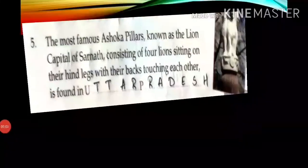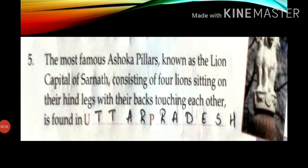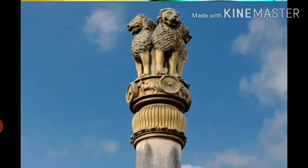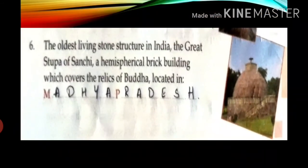Fifth one: the most famous Ashoka pillar, known as the Lion Capital of Sarnath, consisting of four lions sitting on their hind legs with their backs touching each other, is found in Uttar Pradesh.